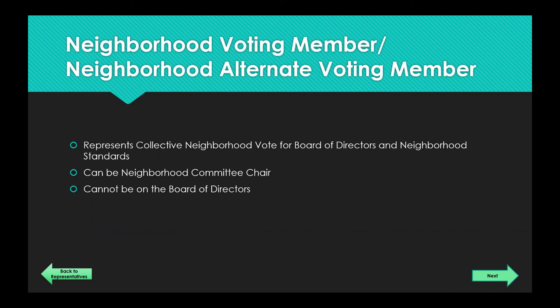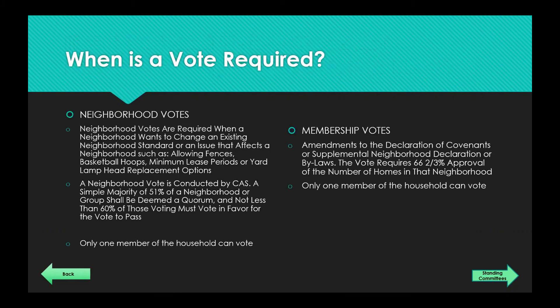Each neighborhood has the opportunity to have a neighborhood chair, a neighborhood voting member, and an alternate voting member. The chair, voting member, and alternate are three separate responsibilities — most neighborhoods have their chair also serve as voting member, but it doesn't have to be that way. It's important to have a voting member to ensure your neighborhood is well represented when votes come up. If a resident is on the Board of Directors they can be the neighborhood chair but cannot be a voting member or alternate voting member.